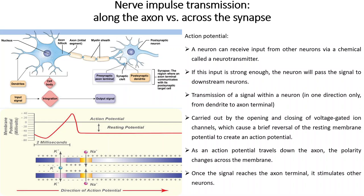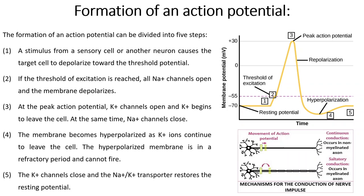Once the signal reaches the axon terminal it stimulates other neurons. An action potential is formed by the following steps: if a stimulus is received by the sensory cell or neuron, it causes the target cell to depolarize towards the threshold potential. If threshold excitation is reached, all sodium channels open and the membrane depolarizes. At the peak action potential, potassium channels open and potassium begins to leave the cell while sodium channels close. The membrane becomes hyperpolarized as potassium ions continue to leave. The hyperpolarized membrane enters a refractory period, then potassium channels close and the sodium-potassium transporter restores the resting potential.